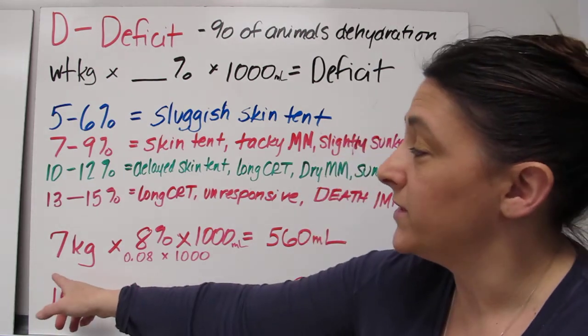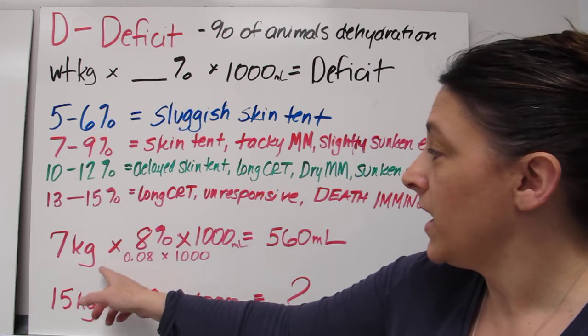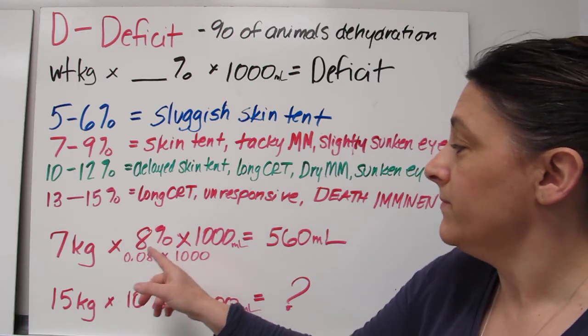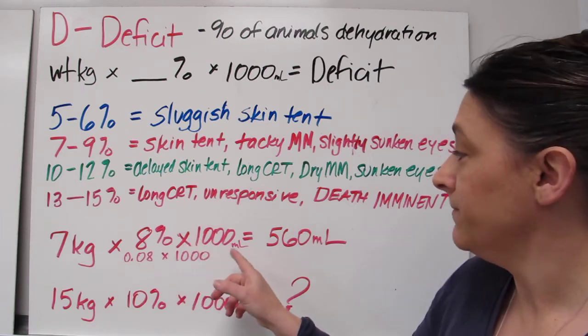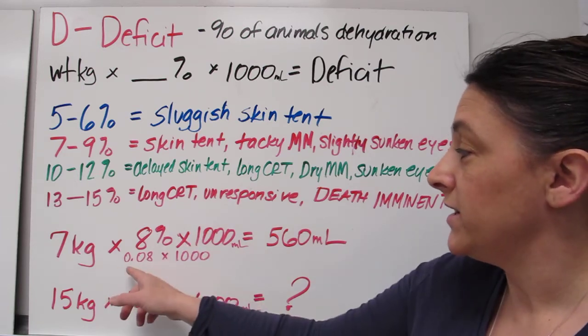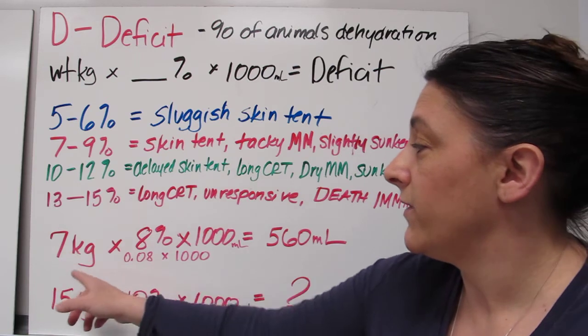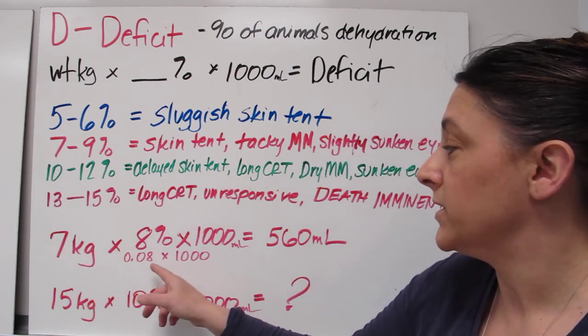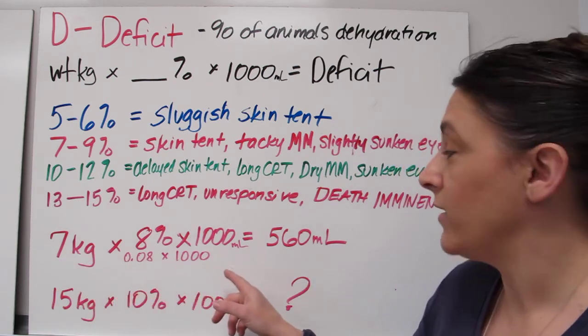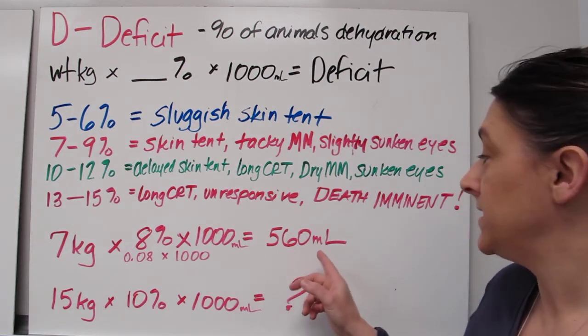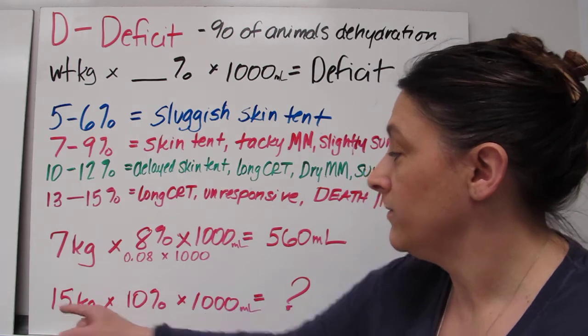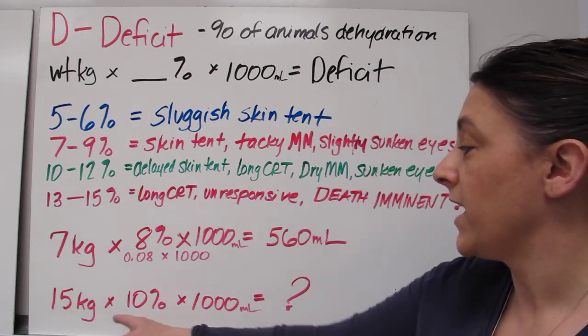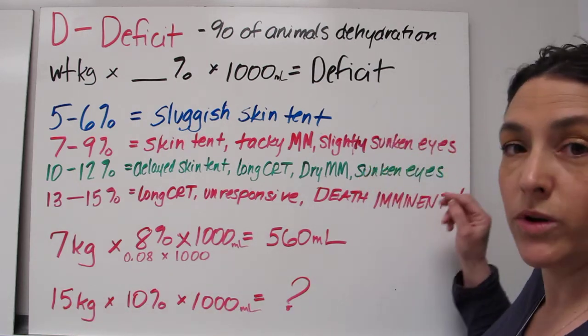So we have a 7 kilogram dog down here. He is 8 percent dehydrated. So I am going to take that 8 percent. Then I am going to times it by 1,000. So I am going to change the percent into a decimal. So 7 kilograms times 0.08 times 1,000 and that is going to give me 560 mLs. So now why don't you guys try to do that on your own? 15 kilograms times 10 percent times 1,000.